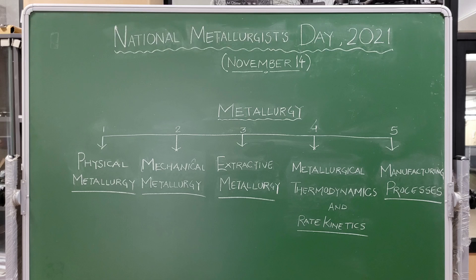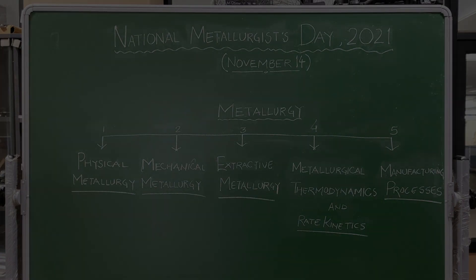Hello everyone, thank you for watching the first part on introduction to metallurgy where we discussed three main classifications: physical metallurgy, mechanical metallurgy, and extractive metallurgy. Now in this part two, we will discuss two other classifications of metallurgy: metallurgical thermodynamics and manufacturing processes. So, let's begin.